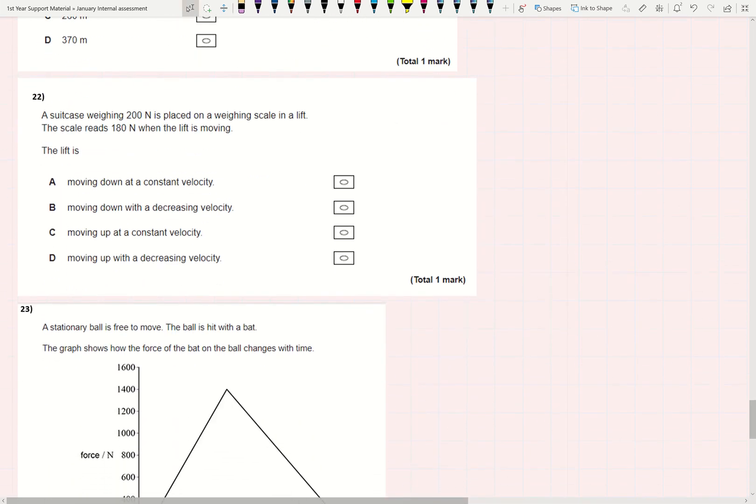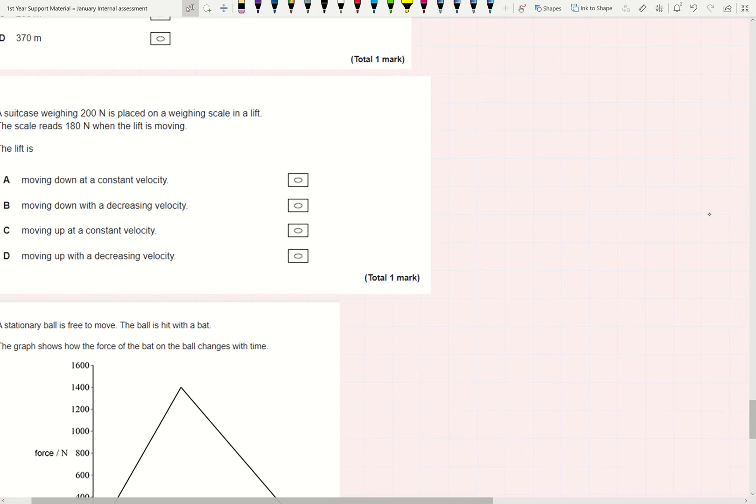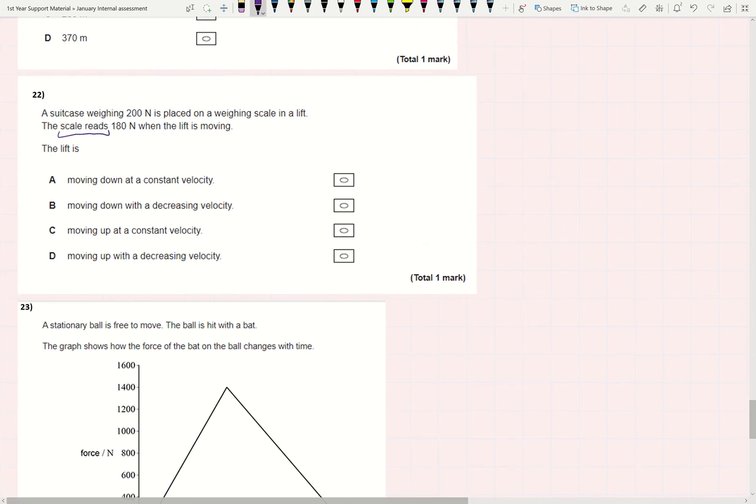22. I've got a suitcase weighing 200 Newtons on a weighing scale in a lift, and the scale reads 180 Newtons when the lift is moving. At this point, what the scale reads, that's the reaction force on the ground. I imagine what it feels like. So it feels like I'm lighter. 180 is less than 200, therefore I feel lighter. I could probably prove that, but I wouldn't like to because I want to get this done.